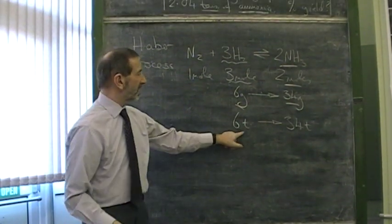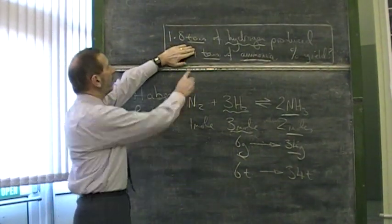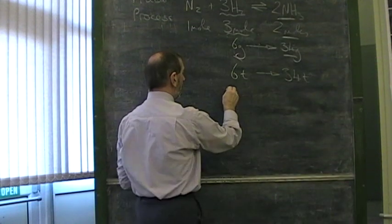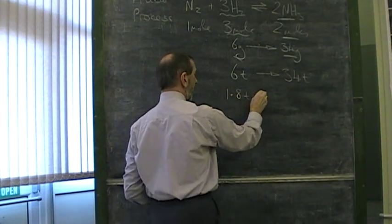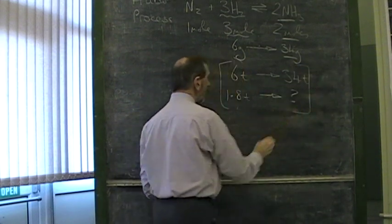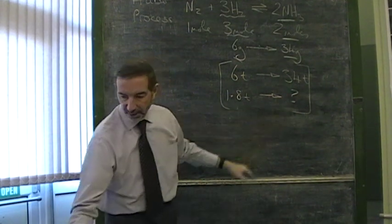If 6 tons gives 34 tons, then how much would you expect to get, starting with just 1.8 tons of hydrogen? Well, since this is less than 6 tons, we've got less than 34.